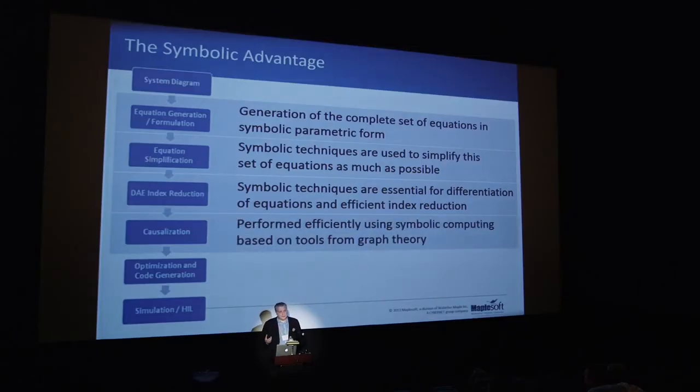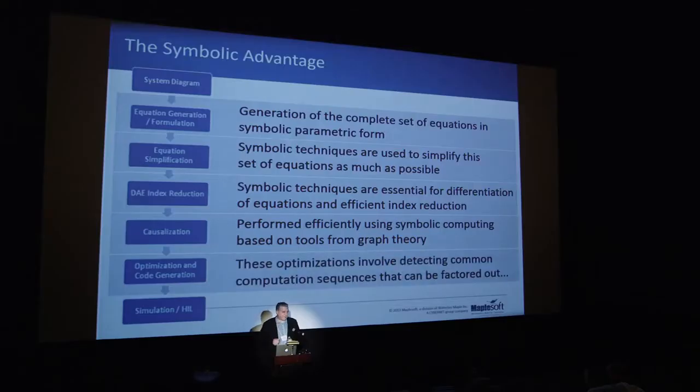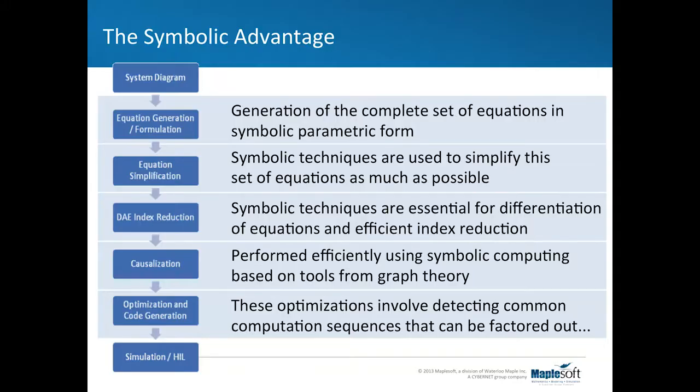The next step is converting the acausal representation into a causal one — putting it into an environment with inputs and outputs. Automating that process is very challenging and our tools are used extensively for it; we implement a linear graph theory approach to the causalization. And then the final step — optimization of C code — is itself a symbolic process. We identify common sub-expressions, extract them, compute them into temporary variables so we're not repeatedly performing the same calculations, which gives a major performance advantage.